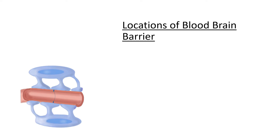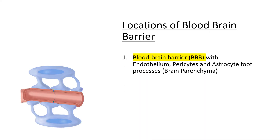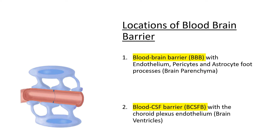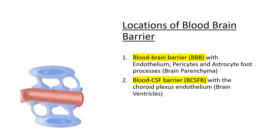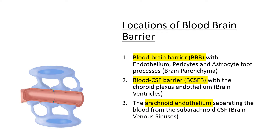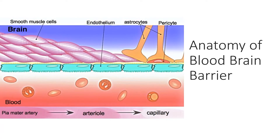There are various locations and interfaces where the blood-brain barrier operates. In the brain parenchyma or interstitium, we have the blood-brain barrier with endothelium, pericytes, and astrocyte foot processes. In the brain ventricles, there is a blood-CSF barrier with the choroid plexus endothelium. In the brain venous sinuses, the arachnoid endothelium separates blood from the subarachnoid CSF.